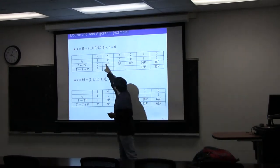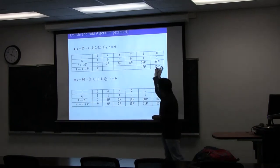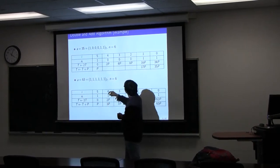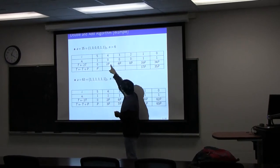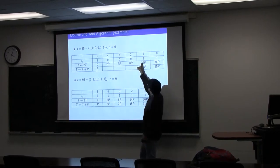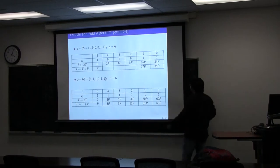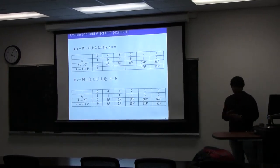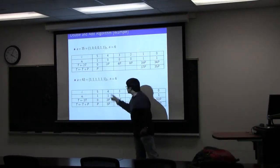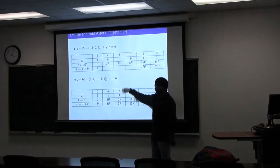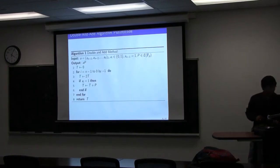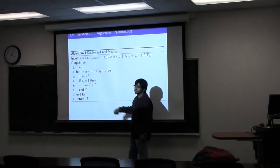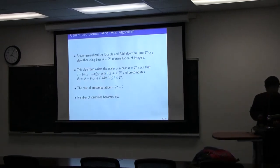We start with P and double it. Since the bit is zero, only doubling happens; again zero, only doubling; zero, only doubling. But when it is one, I double the point and add point P. Similarly at 17, I double to get 34, and since there is a one I add one more point. So that's how the double-and-add algorithm works. The algorithm doubles, and if the bit a_i is one, we also add.